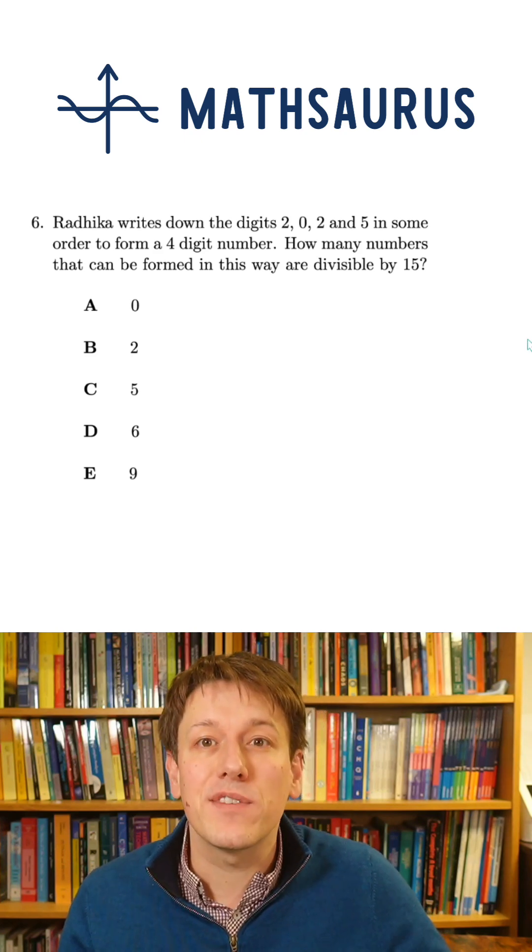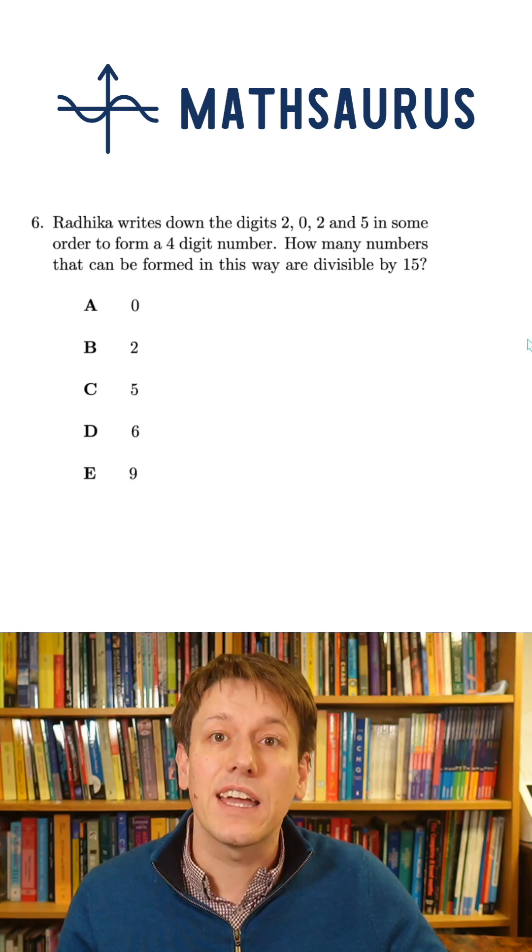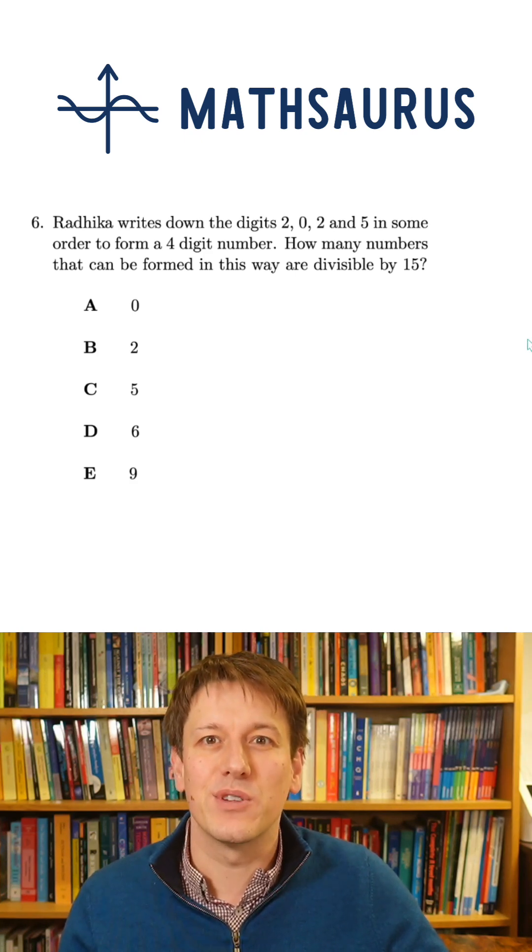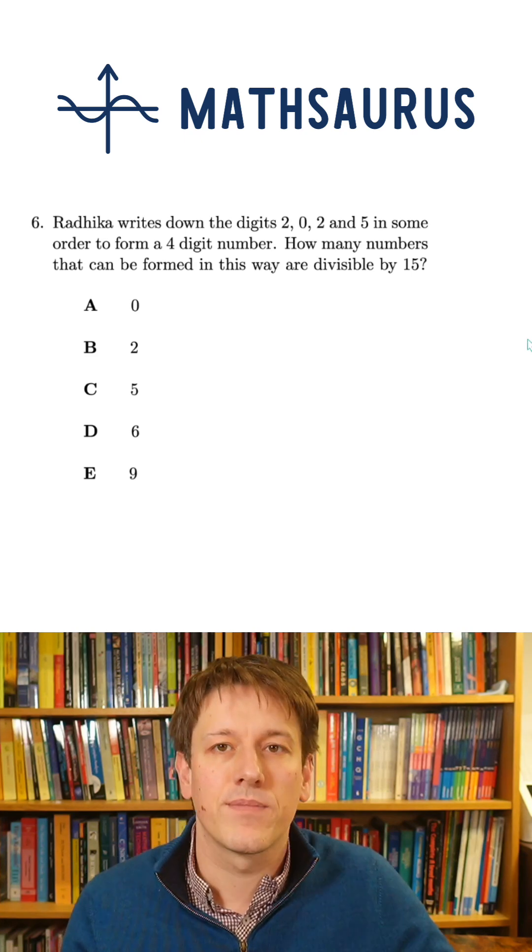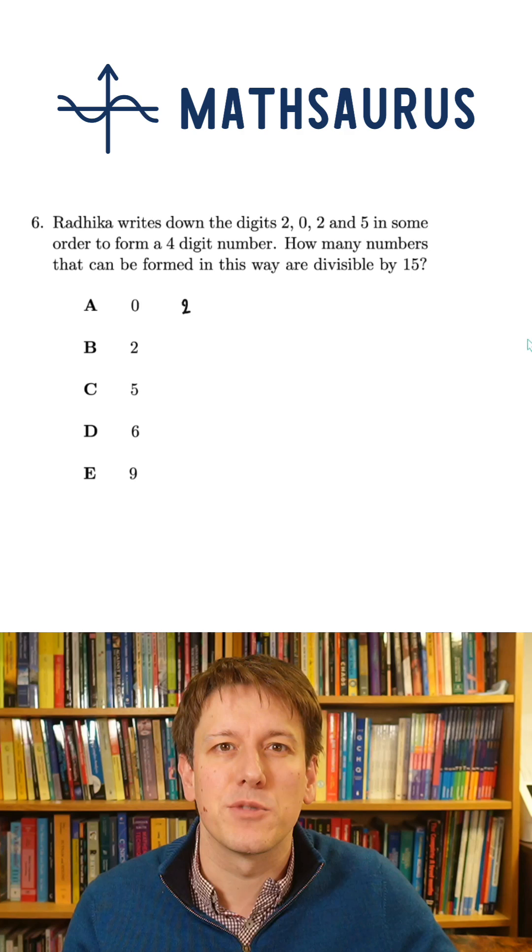So for a number to be divisible by 15, it just has to be a multiple of 3 and a multiple of 5. You can check out the other Mathsaurus videos and my online courses if you want to know more about all of these rules. But I'm going to assume that you're happy that this would be equivalent to finding numbers that are multiples of 3 and multiples of 5.